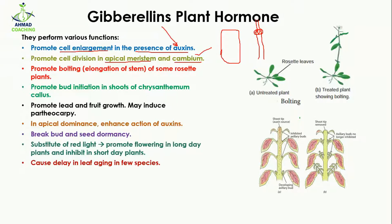Along with this, gibberellin promotes bolting, which means elongation of the stem in some rosette plants. For example, here we have the untreated rosette plant — you can see the stems are not long. But when treated with gibberellin, you can see that stem elongation has taken place.